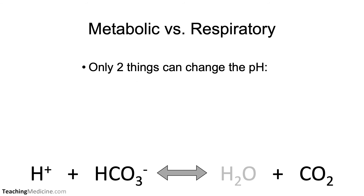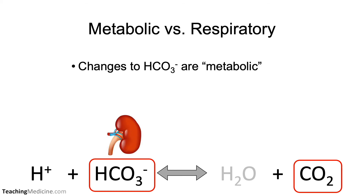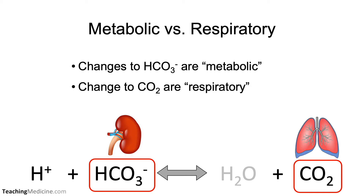So in this equation, only two things can change the pH: a change in the bicarb or a change in the carbon dioxide. When changes to bicarb result in changes to the pH, we say that these are metabolic disorders. When changes to carbon dioxide result in changes to the pH, we say that these are respiratory disorders.